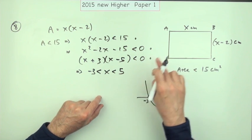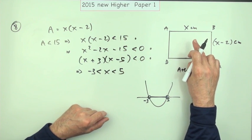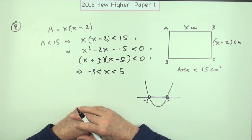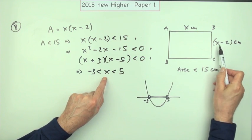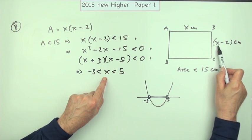In terms of the real dimensions of a rectangle, for instance, the breadth of that rectangle is given by this x - 2. That can't be zero or the rectangle wouldn't be there.